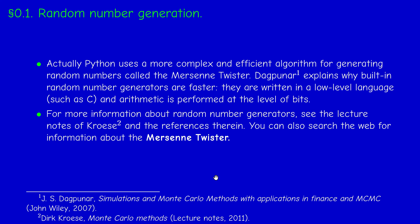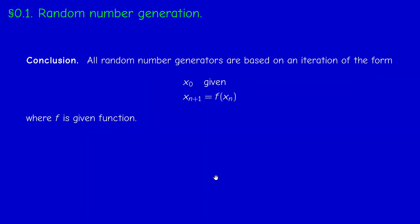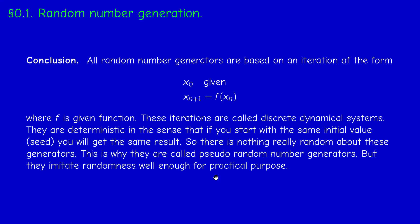We'll go step by step and I'll talk more about time efficiency later. All these random number generators are based on the same idea: we start with an initial seed and construct a sequence inductively by iterating a function f. The function f can be complicated. If you start from exactly the same initial value, you always reach the same numbers — we'll see this next time.